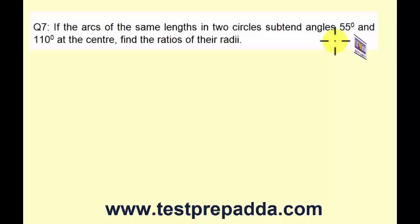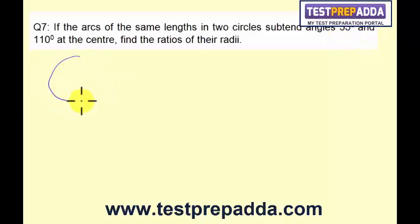Arc length of the two circles is the same. So if I take two circles, one of radius R1, one of radius R2, arc length is same. In one case, the angle is given as 55 degrees, and in the other case, the angle is given as 110 degrees. So if I take this as 55 degrees and this as 110 degrees, these two arc lengths are the same.